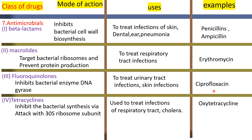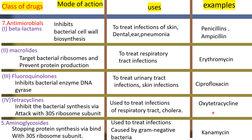Tetracycline inhibits bacterial cells. Tetracycline attacks and binds with the bacterial ribosome, the 30S ribosomal subunit, preventing protein synthesis. This is the mechanism of tetracycline.